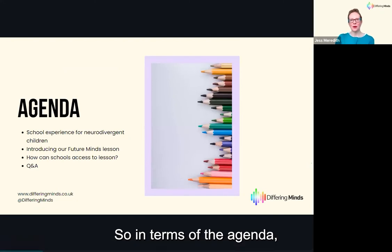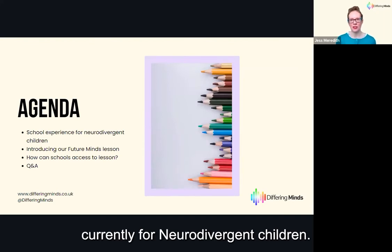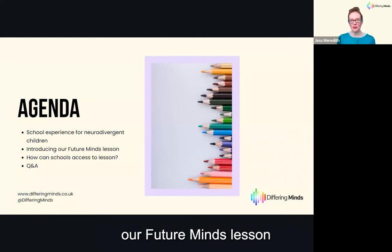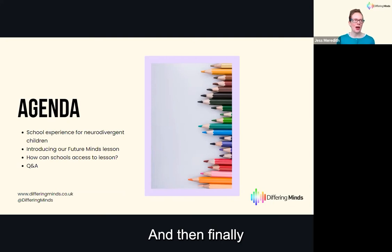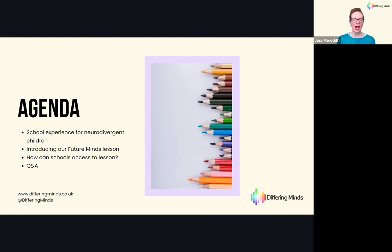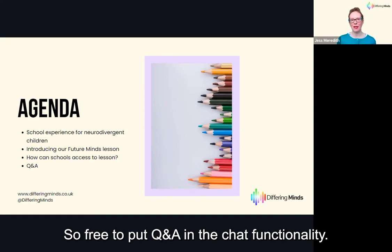In terms of the agenda, what we're going to talk through today is a little bit about the school experience currently for neurodivergent children. We'll then move on to talk about our Future Minds lesson and what we've done to date, and finally we'll talk about how schools can access the lesson and the different options available. At the end we will facilitate a Q&A.